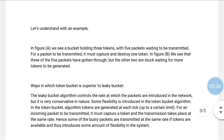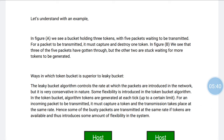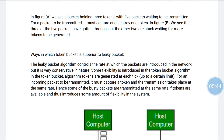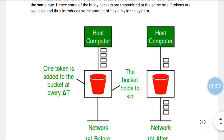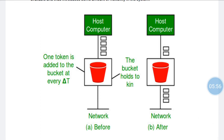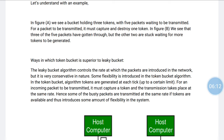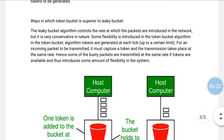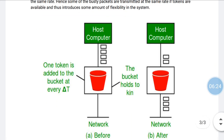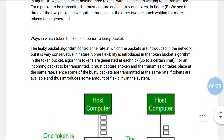In figure A, we see a packet holding three tokens with five packets waiting to be transmitted. For a packet to be transmitted, it must capture and destroy one token. In figure B, we can see that three of the five packets have gotten through, but the other two are waiting for more tokens to be generated.